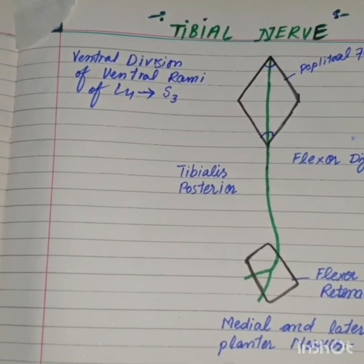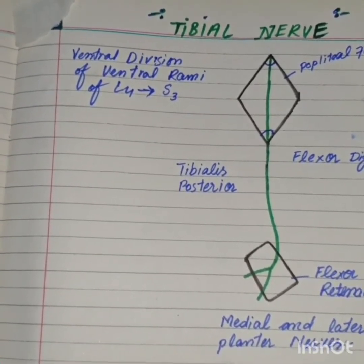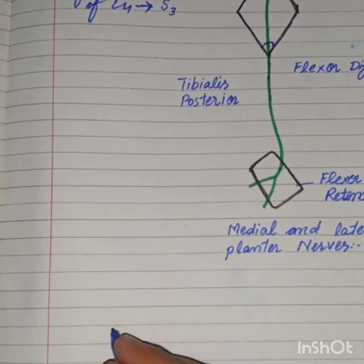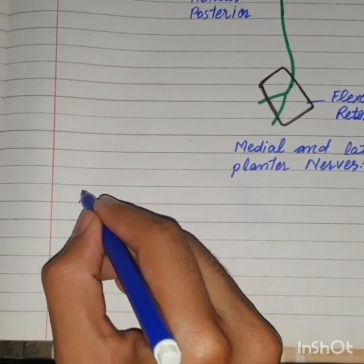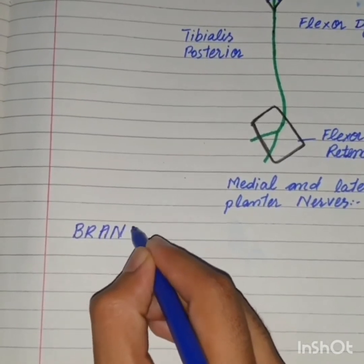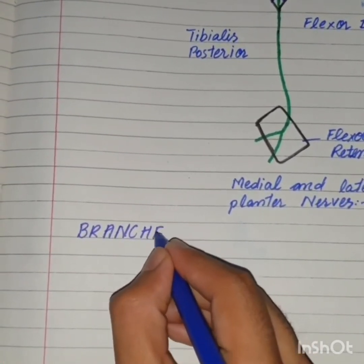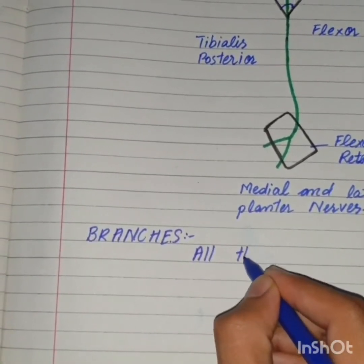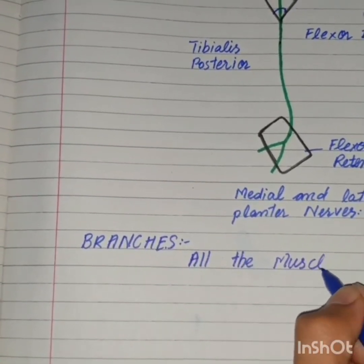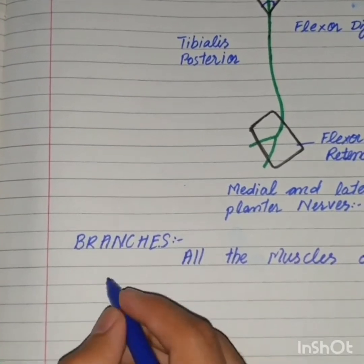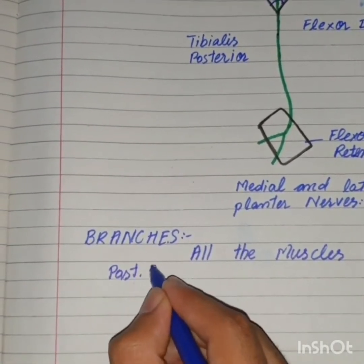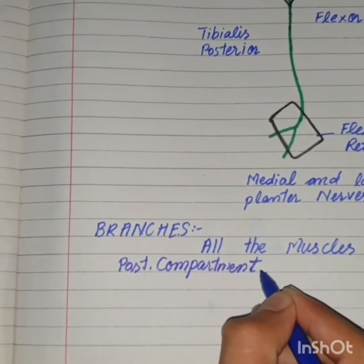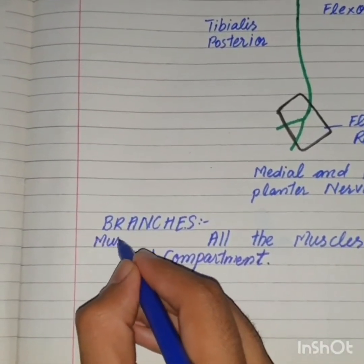Now we are going to talk about the branches — the muscular branches of the tibial nerve. As we know, it is the nerve of the posterior compartment, or the flexor compartment, of the leg, so it supplies branches to all the muscles of the posterior compartment. These are the muscular branches.